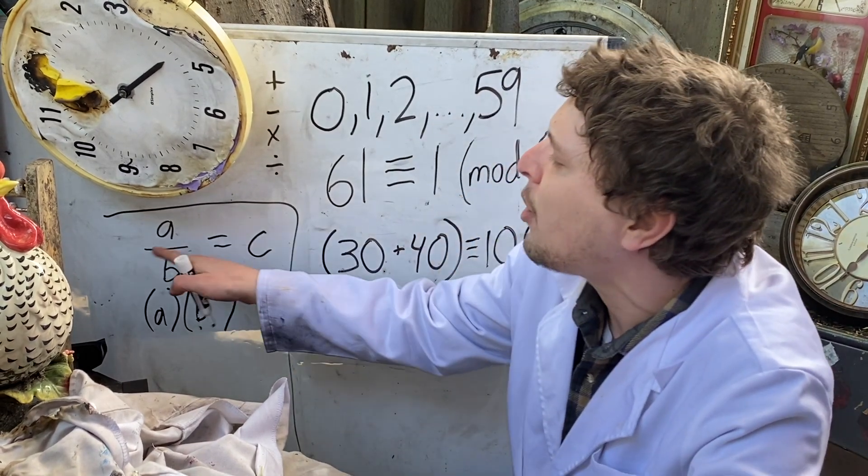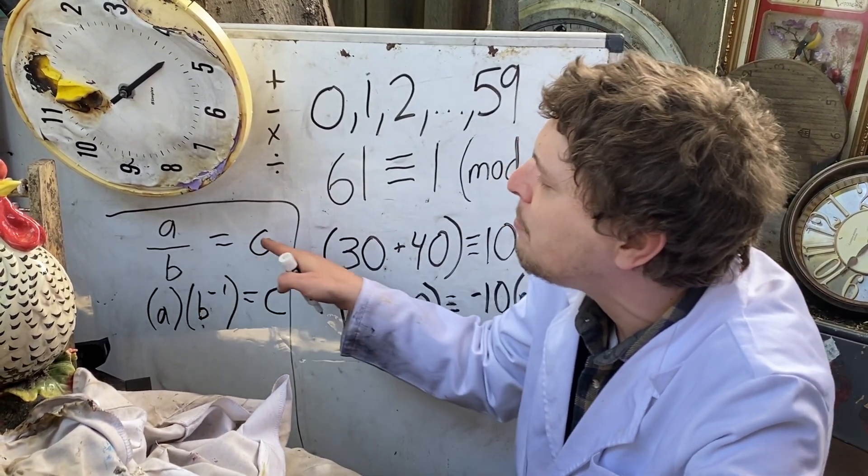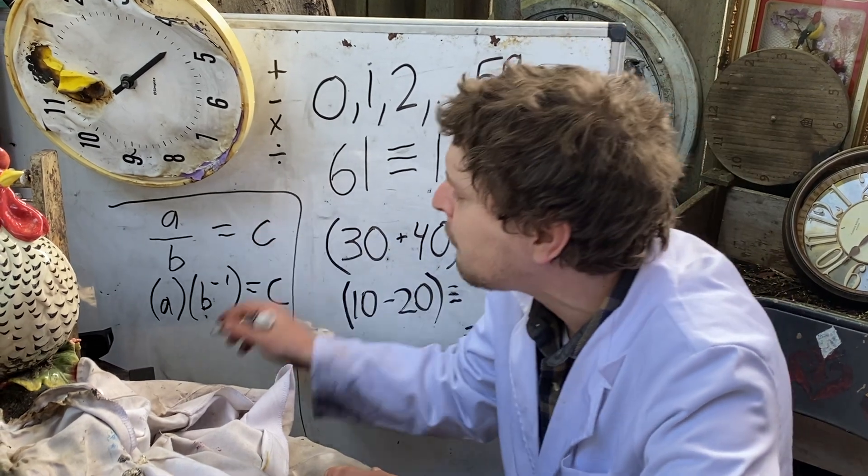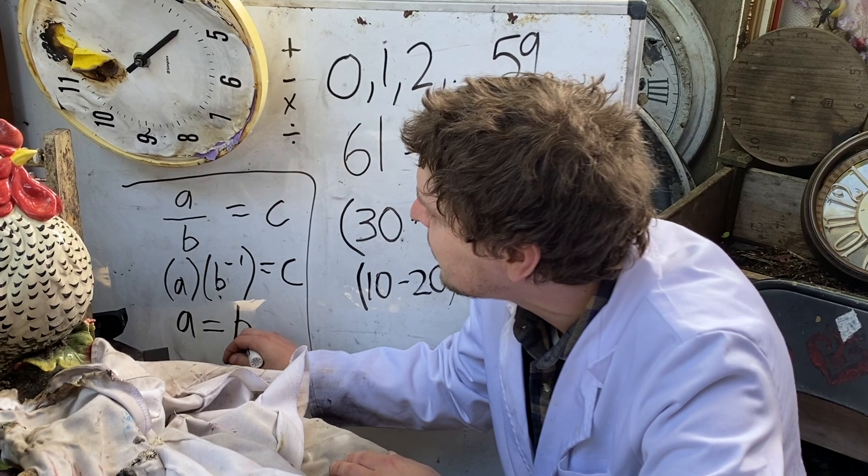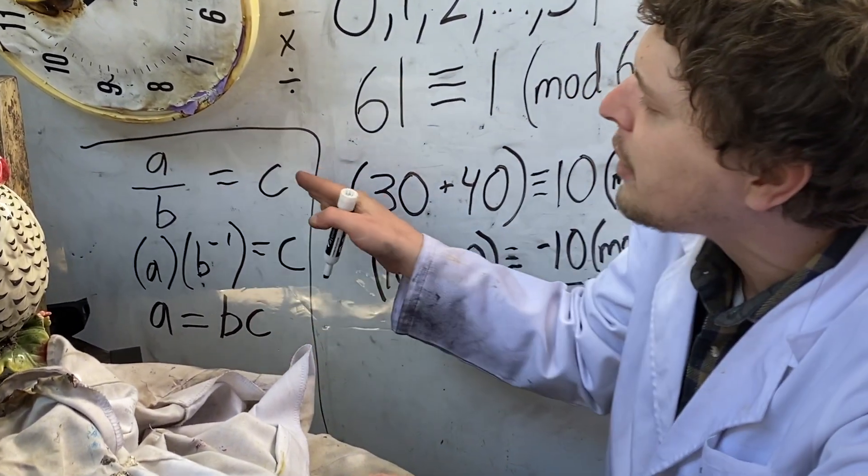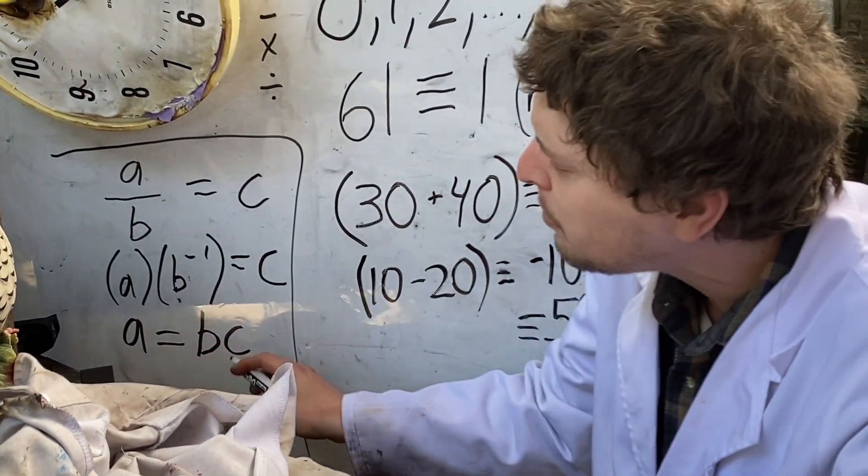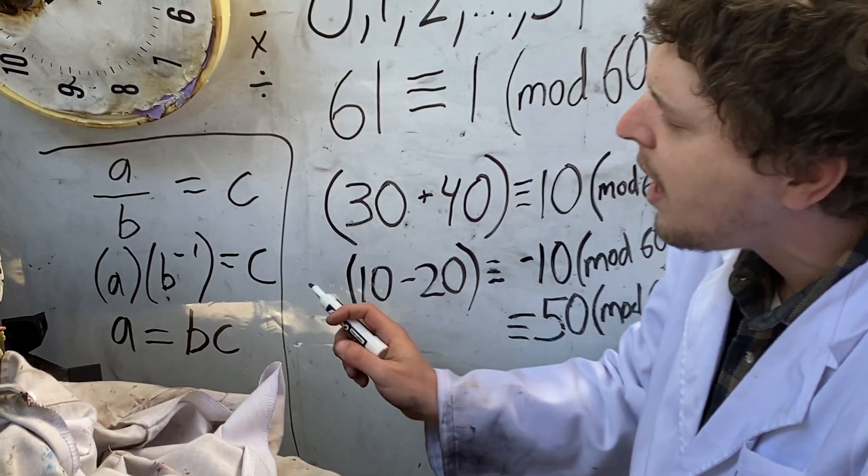Or we could even multiply both sides of this by b to see that it's equivalent to the expression a equals b times c, and that this division is secretly a multiplication of sorts in disguise.